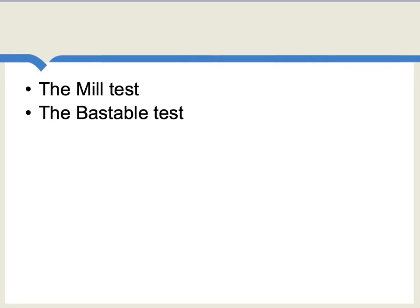When talking about problems with industrial policy, there are also two particular tests to keep in mind: the Mill Test and the Bostable Test. The Mill Test requires that a protected sector eventually survive in a tough world of global competition once government protection is removed. The Bostable Test requires that although industrial policy may involve costs now in the form of industrial protection, over time the benefits must outweigh those current costs. For industrial policy to be a good idea, it generally has to pass both tests.